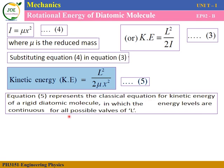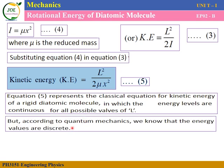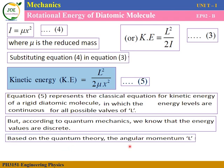In classical mechanics, energy levels are continuous. However, in quantum mechanics, energy levels are discrete — there are sub energy levels. We now apply the quantum theory.